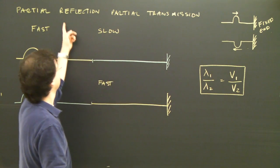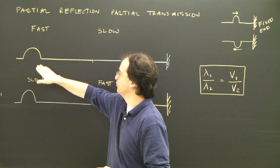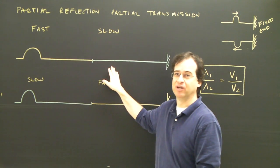What we're going to look at is partial reflection and partial transmission. That means what happens to a wave when it travels from one medium into another.